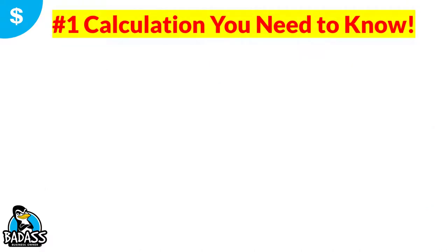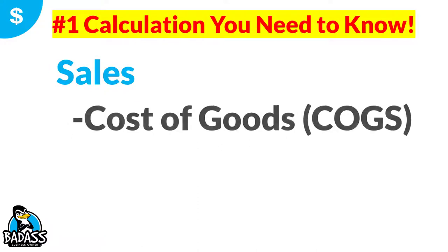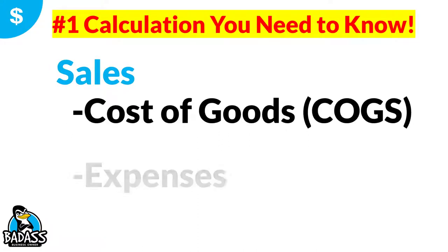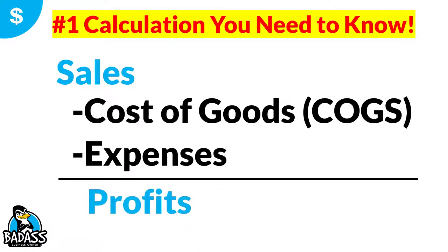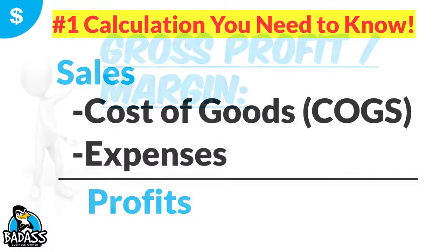Now, the first thing you gotta remember — I preach this all the time. The number one calculation you need to know is sales minus cost of goods minus expenses equals profit. This is the flow of money through your business. You get your top line sales minus the cost to provide the service or product, minus your expenses, and that's how you end up with your final profits for the business.